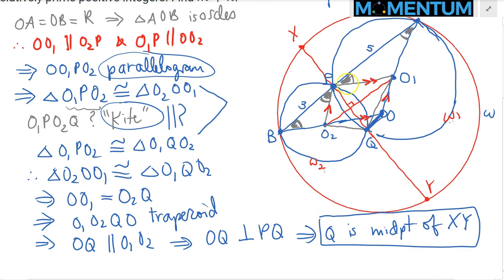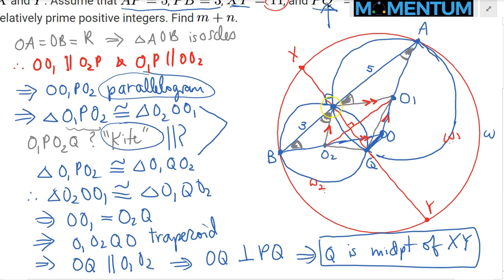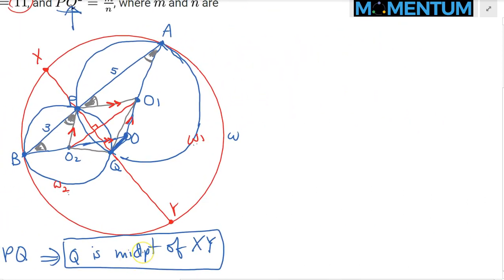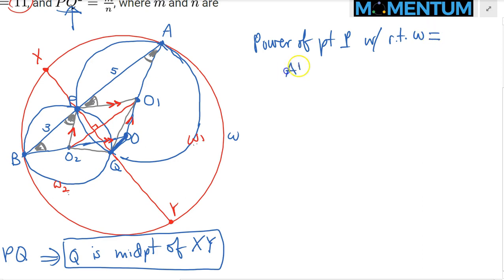Now we can finish the problem. We apply the power of point P with respect to omega, calculated two ways. Power of P equals AP times PB, and also equals XP times PY. AP times PB is 5 times 3 = 15.